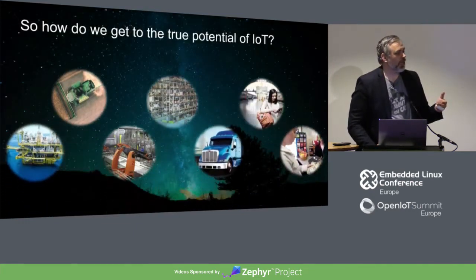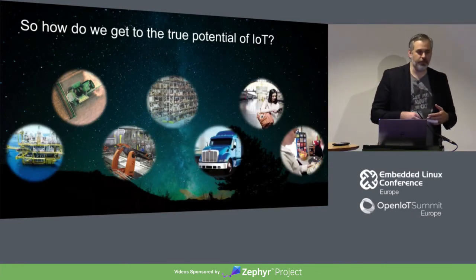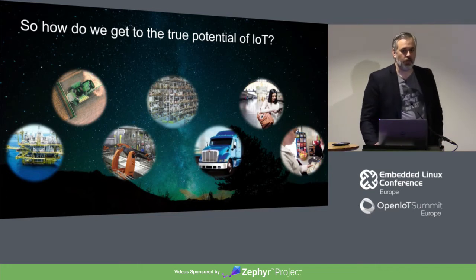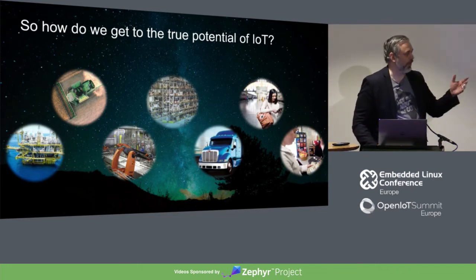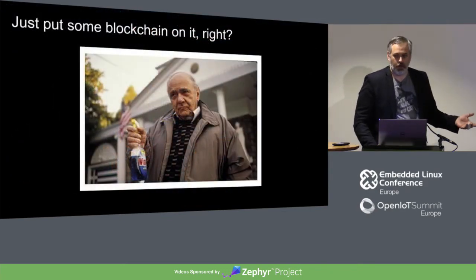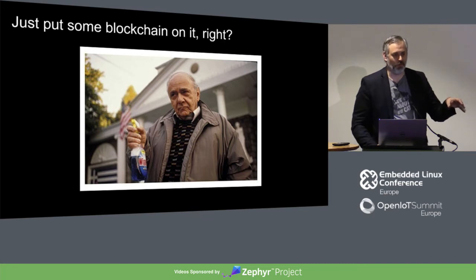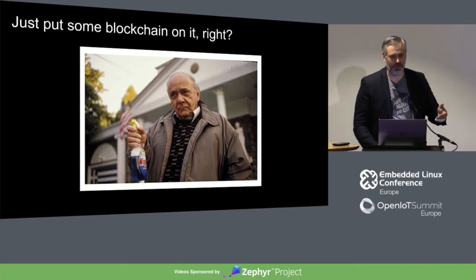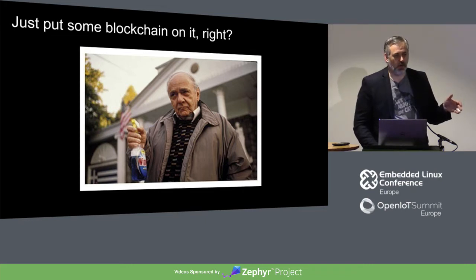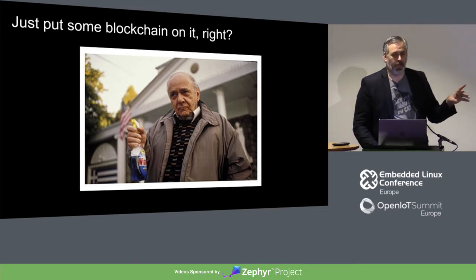The true potential is a system of systems — instead of a bunch of intranets, everything interconnected across an ecosystem. That's the real power. We'll put some blockchain on it, right? I call blockchain one of the Windexes of technology — like the dad in My Big Fat Greek Wedding who sprays Windex on everything. 5G is also one. Blockchain will change society as we know it, but it's way overhyped. I like to talk about technology in a practical way. It will matter, but be careful with the hype.